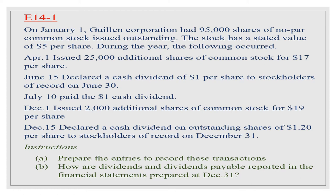July 10 — paid the $1 cash dividend. December 1 — issued 2,000 additional shares of common stock for $19 per share. December 15 — declared a cash dividend of $1.20 per share to stockholders of record on December 31. Instructions: (a) Prepare the entries to record these transactions. (b) How are dividends and dividends payable reported in the financial statements prepared at December 31?